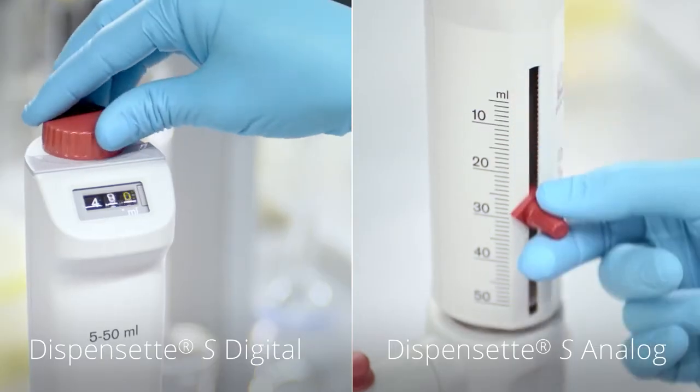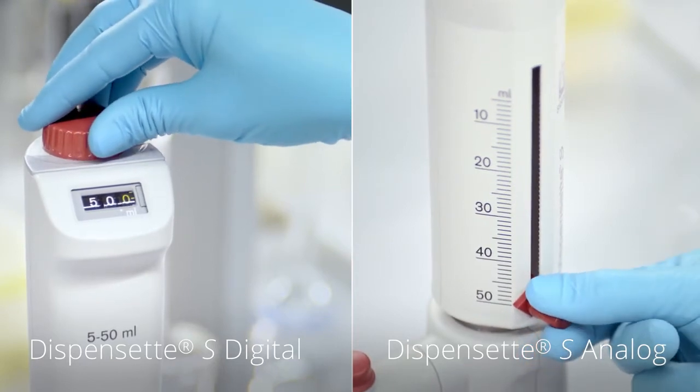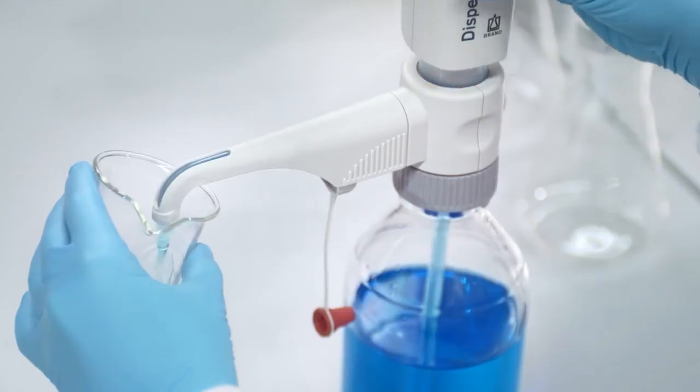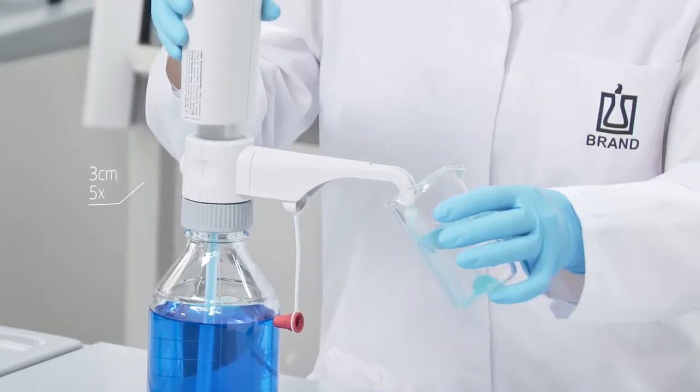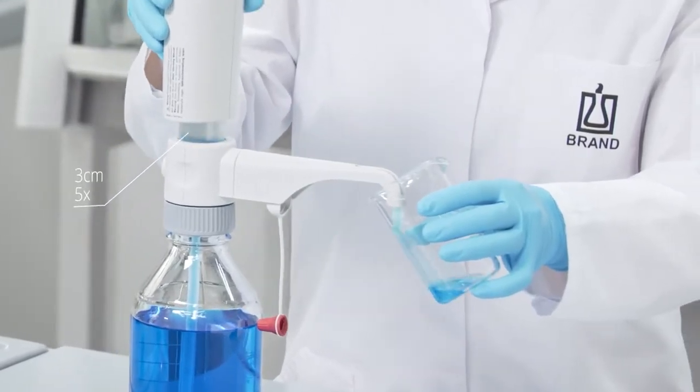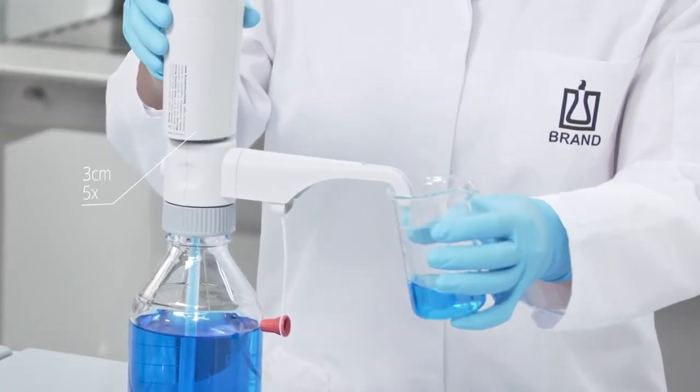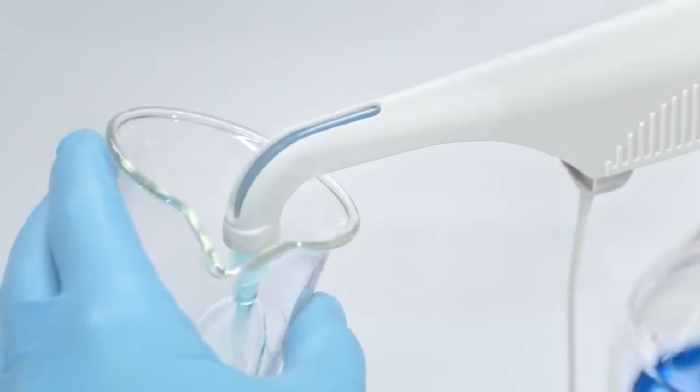Set the instrument to its maximum volume and open the screw cap of the discharge tube. For priming, pull up the piston approximately 3 cm and push it down rapidly until the lower stop. Repeat this procedure 3-5 times until the discharge tube is bubble-free. A few small bubbles do not impair accuracy.